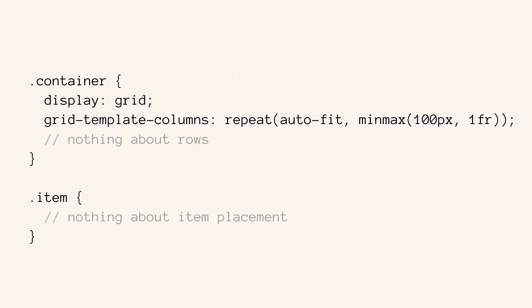With responsive web design, with media queries, and with columns sized using percents in a float-based world, you have to tell the browser how many columns to make at any given point. But with Grid and with this min-max syntax, you don't need to do that. Here on the container I've said display Grid, grid-template-columns repeat auto-fit minmax 100px 1fr. I have another video where I go into this example in more detail. But the heart of this is the min-max syntax, where we say each column should be a minimum of 100 pixels and a maximum of 1fr.